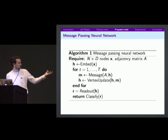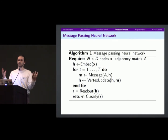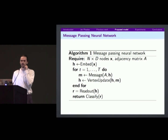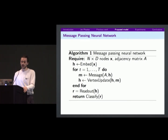After T iterations, you have a collection of hidden states across the graph. You collapse these into a single graph-level representation — for example, taking the mean of all hidden states — and apply a binary classifier on top.